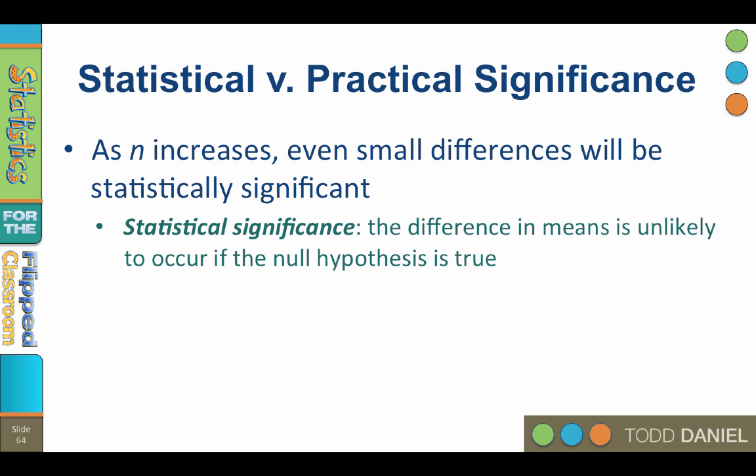If the groups were not different, as you surmised, you would not get these findings. But you did get these findings, so it is highly likely that the groups were different after all, and that is a statement of probability. Statistical significance tells us that differences we found were unlikely to have occurred by chance.